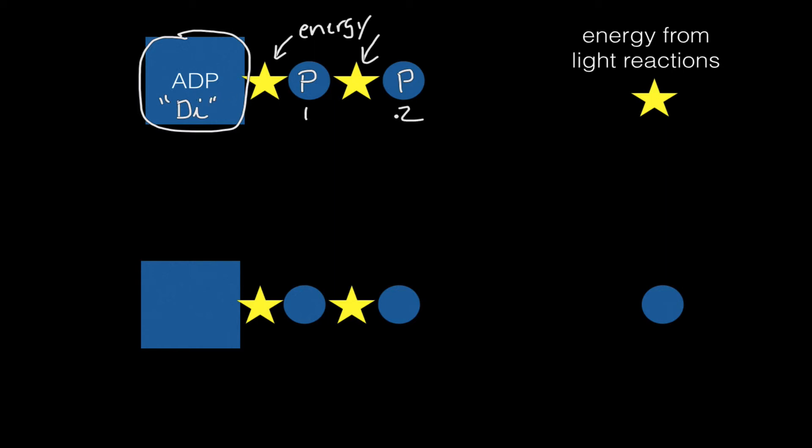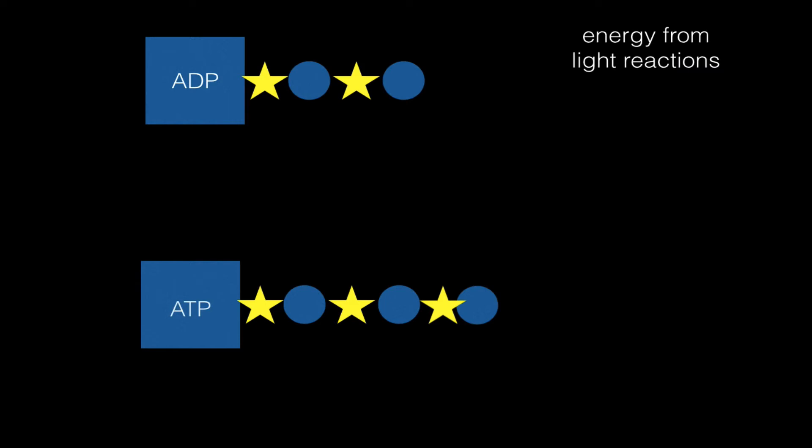ADP is called DP because it has two or diphosphates. Now what happens in the light reactions is we're changing ADP into ATP by attaching another phosphate, and the energy to attach the third phosphate is coming from the light reactions.